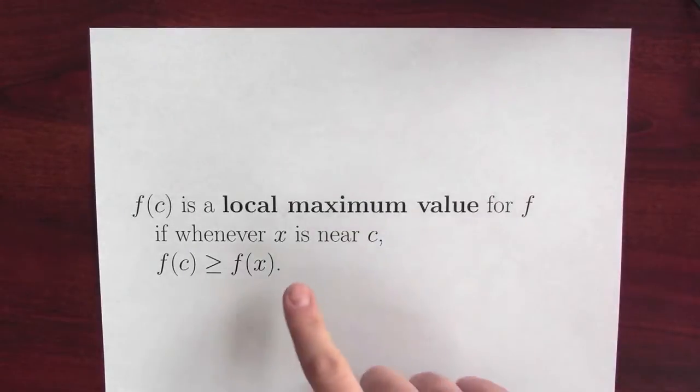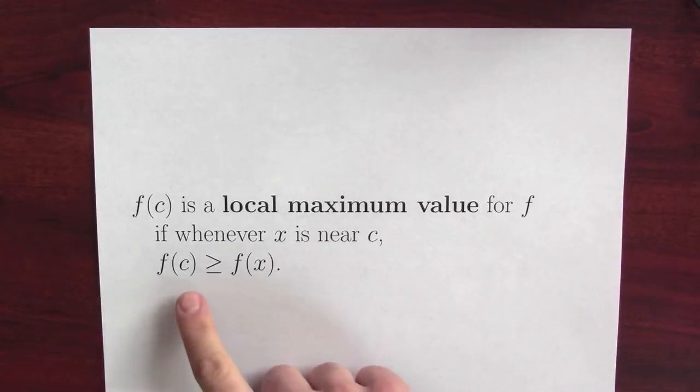f of c is a local maximum value for f if whenever x is near the input c, f of c is bigger than or equal to f of x.